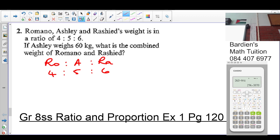If Ashley weighs 60 kilograms, so where do we put that? Under Ashley's weight, not so. What is the combined weight of Romano and Rashid? In other words, I must work out what Romano's weight is and what Rashid's weight is, and then I must add it together.